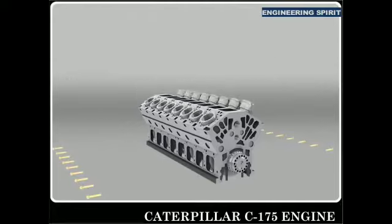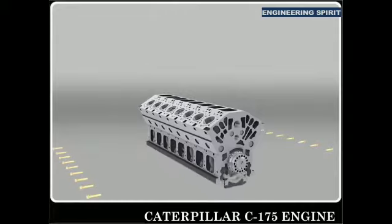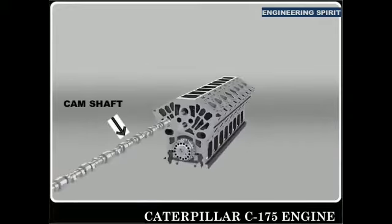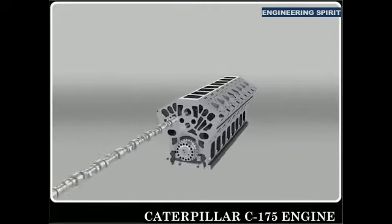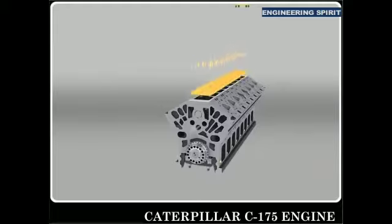This is the cylinder block. From the bottom, the connecting rod caps are placed. This is the camshaft function — the valves operate according to the engine speed.